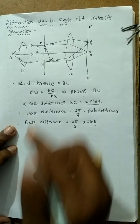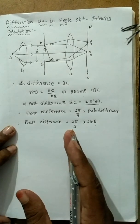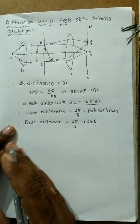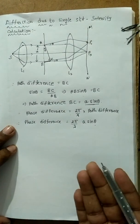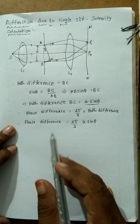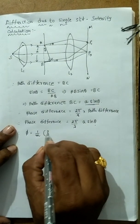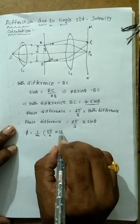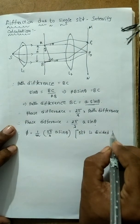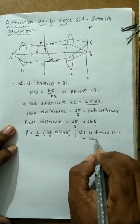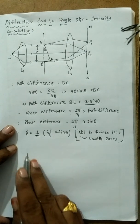We divide the total slit into M equal parts. When divided into M equal parts, the amplitude becomes A' and the phase difference is also divided by M. So the phase difference per part equals (1/M) × (2π/λ) × A sin θ. Therefore, δ = (1/M) × (2π/λ) × A sin θ.